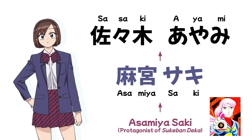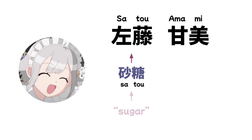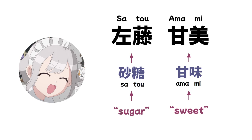Satou Amami's name is a pun on 'Satou,' meaning 'sugar,' and 'Amami,' meaning 'sweetness.' Amami herself is a very sweet person to a fault — she never says no to any request. Before befriending Komi-san, she would even spend every morning tidying the classroom by herself.